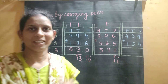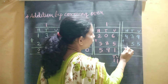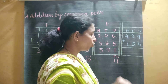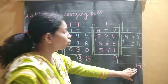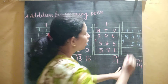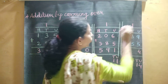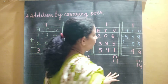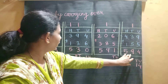Now we will see the last example: 439 plus 155. Let's start. 9 plus 5 is equal to 14. So 14 means 4 units and 1 ten — we write 4 at the unit place and carry over 1 ten. Next, 5 plus 3 is 8, and 8 plus 1 is 9. Then 4 plus 1 is 5. So the answer is 594.